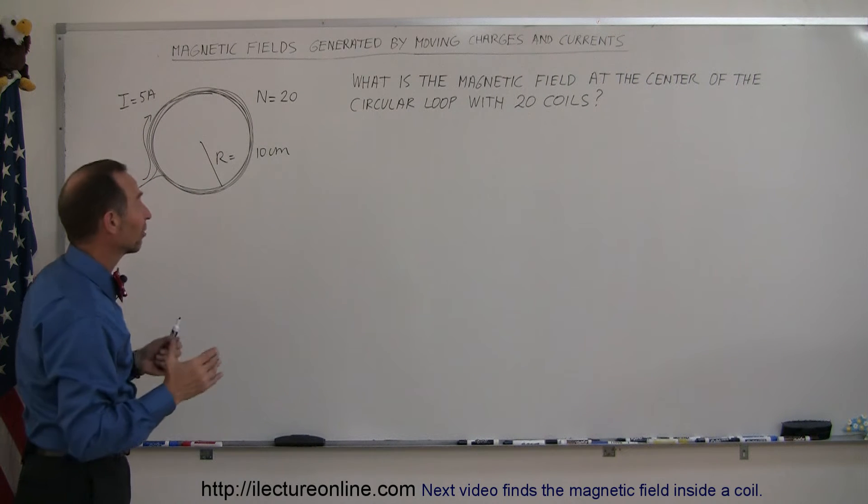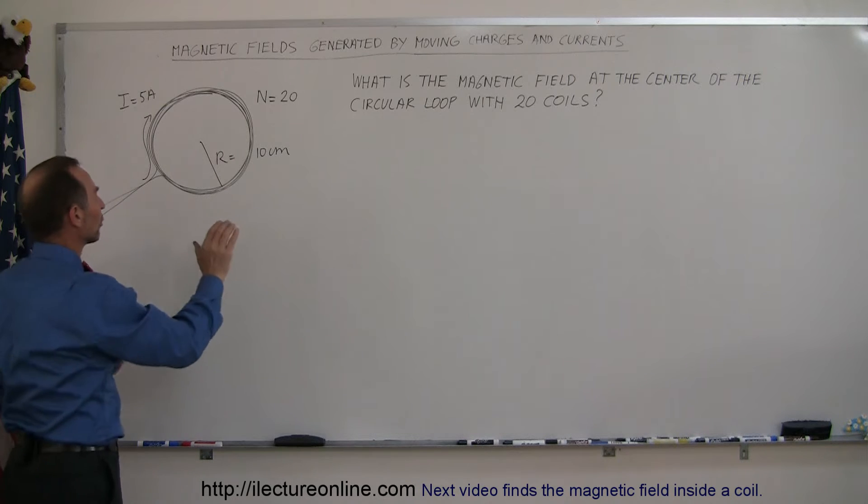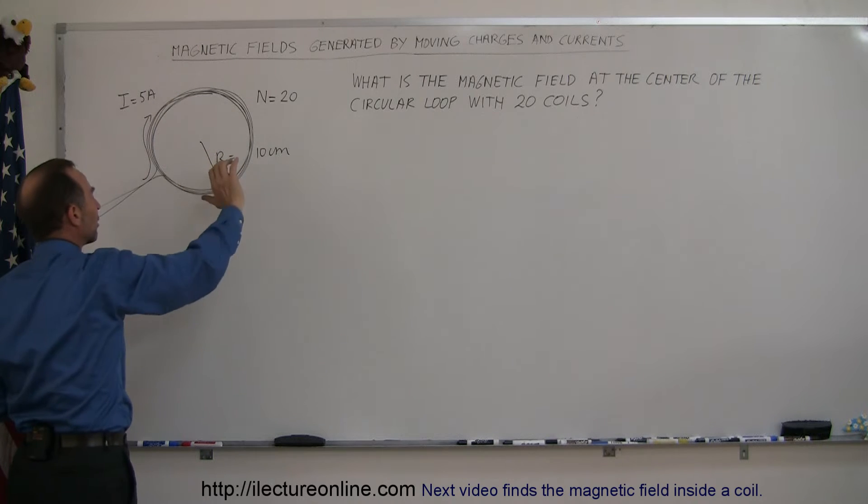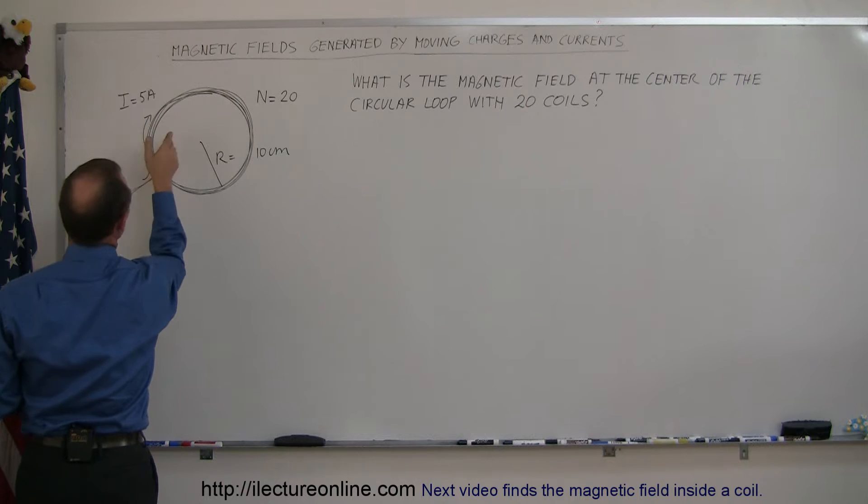Well before we find the magnitude let's think about the direction. If you curl your thumb in the direction of the current, now you can see how the current goes around the loop and you put your thumb in the direction of the current, your fingers will curl in the direction of magnetic field.